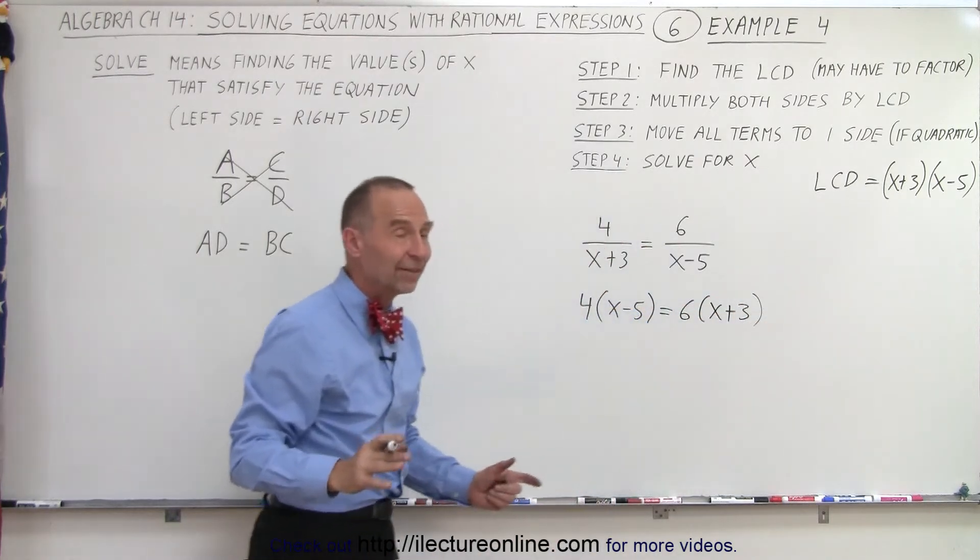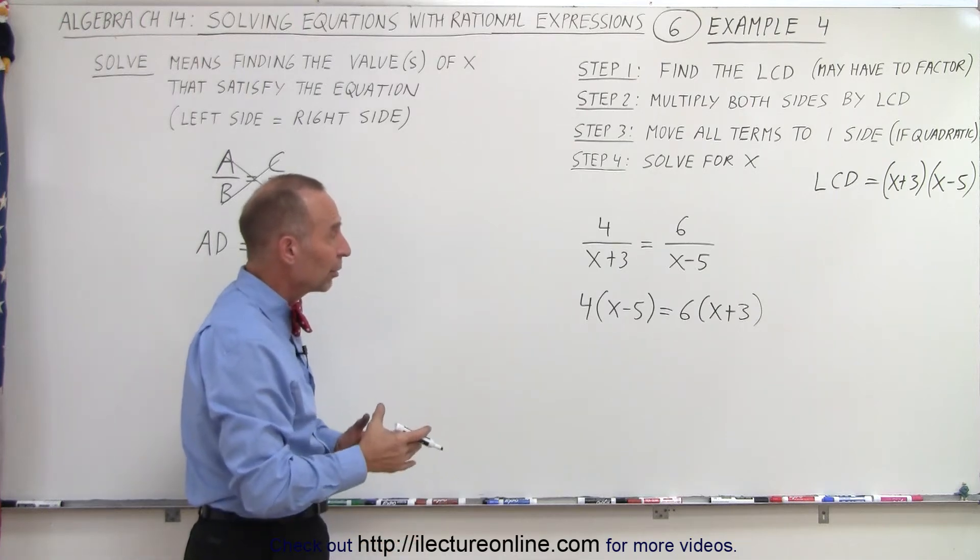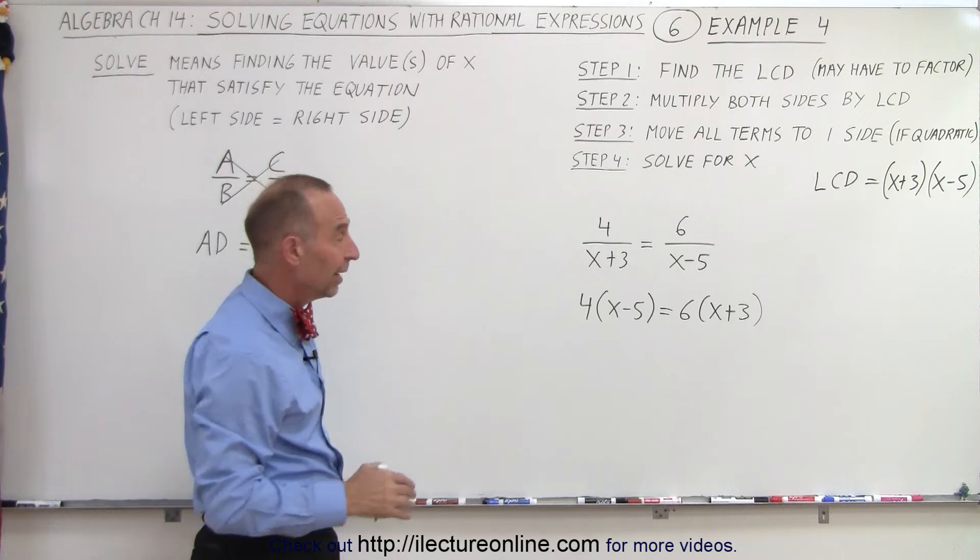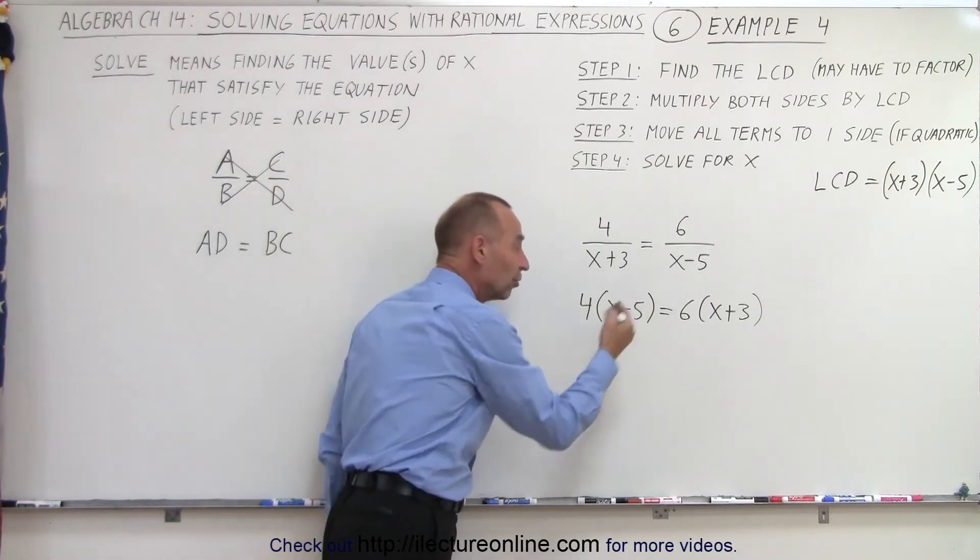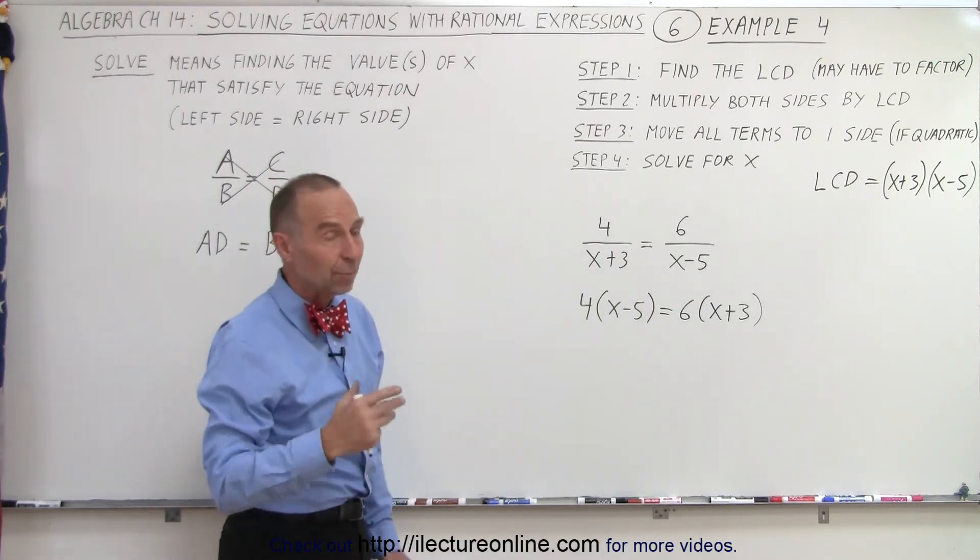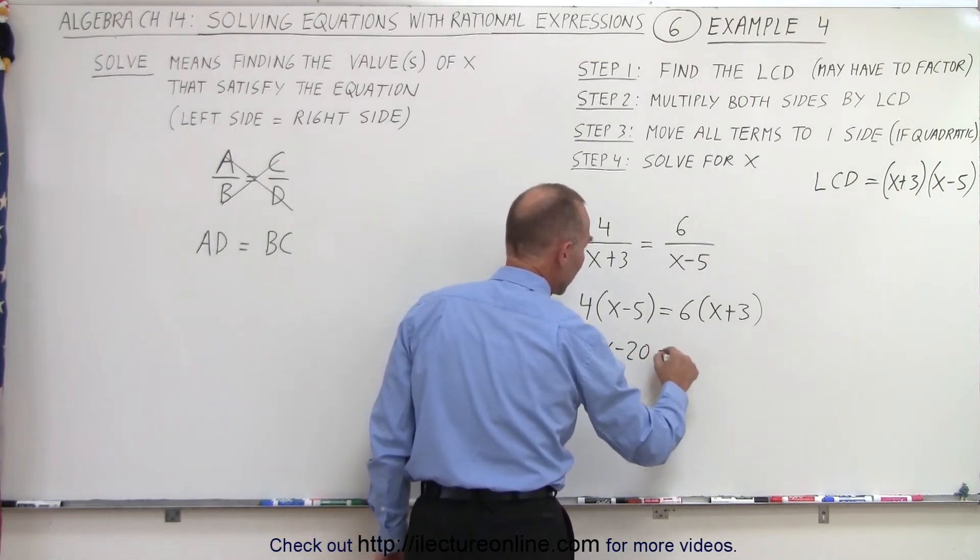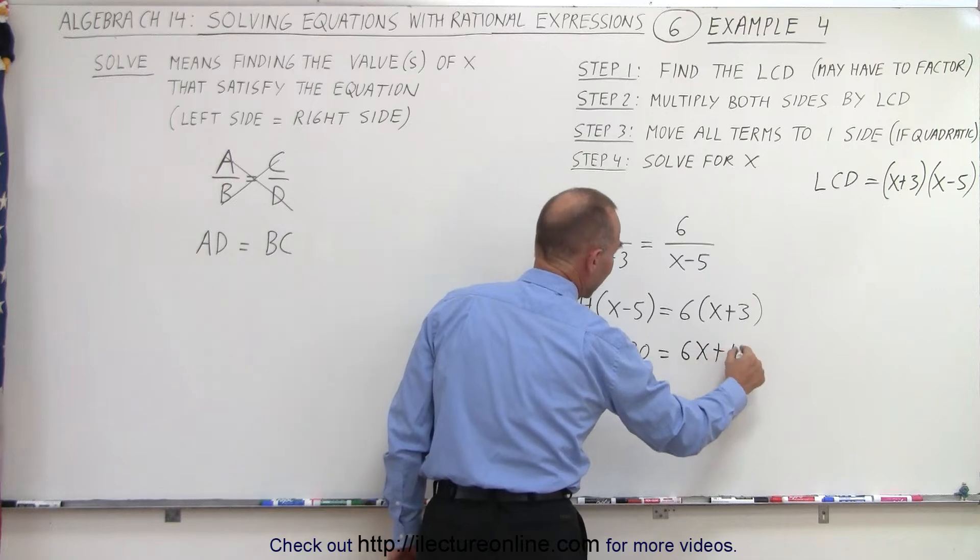Of course, we would get exactly the same result if we simply multiplied both sides of the equation by the lowest common denominator. It's just simpler and easier to do it like this. Now we need to multiply, so we get rid of the parentheses. 4x minus 20 equals 6x plus 18.